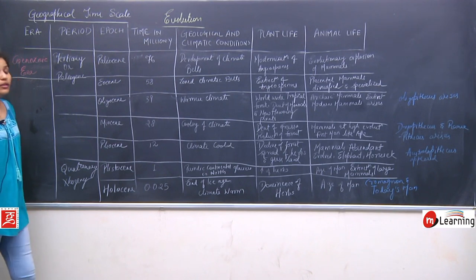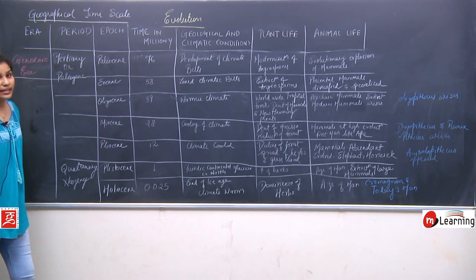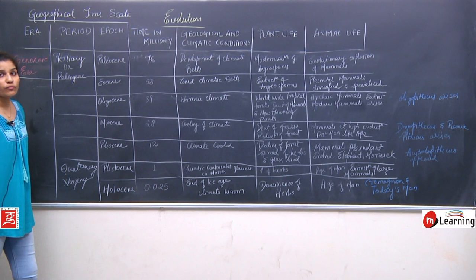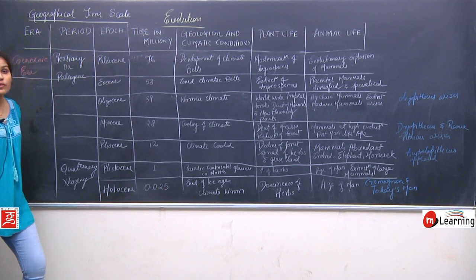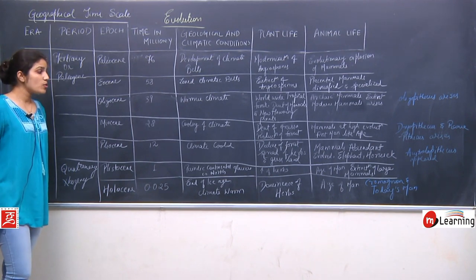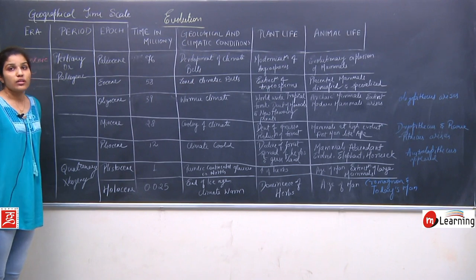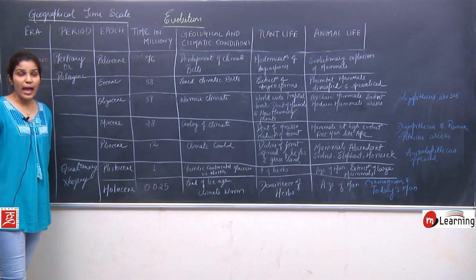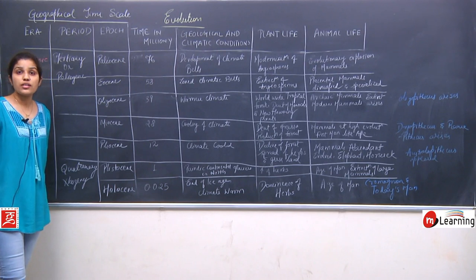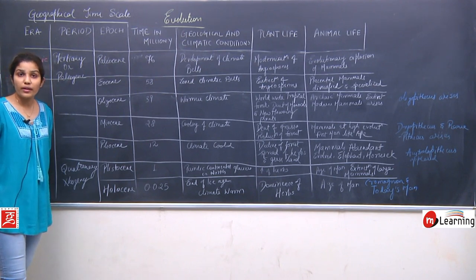In the Pliocene epoch, around 12 million years ago, climatic conditions were quite cooler and forests were declined. In the Miocene epoch, development of grasses and reduction of forests had begun; in Pliocene they are now totally declined. Grasses and herbs become dominant. In animal life, mammals were abundant and elephants, horses and other mammals were now being evolved. It was also the time when Australopithecus arose.